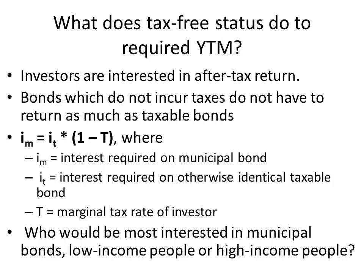In countries with a flat income tax, it wouldn't matter whether you were low or high income — the tax benefit would be the same. The person that most comes to mind regarding municipal bonds is Ross Perot, who ran for president in 1992 and 1996 on a platform about national debt and insufficient taxes. Yet after selling his company, Ross Perot invested all that money in municipal bonds, making his income federally tax-free — which is just a little bit hypocritical.